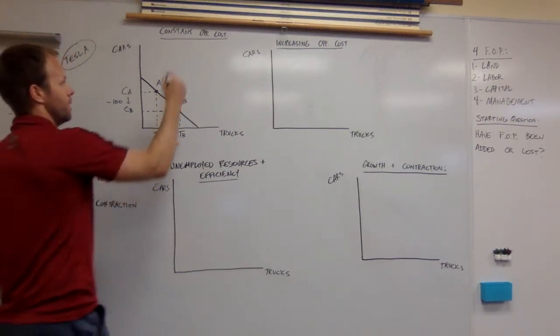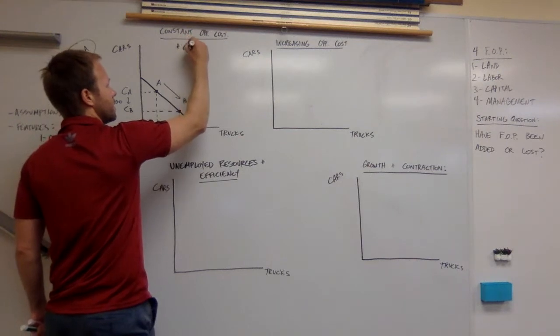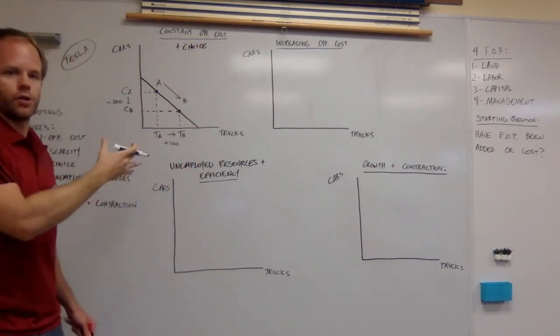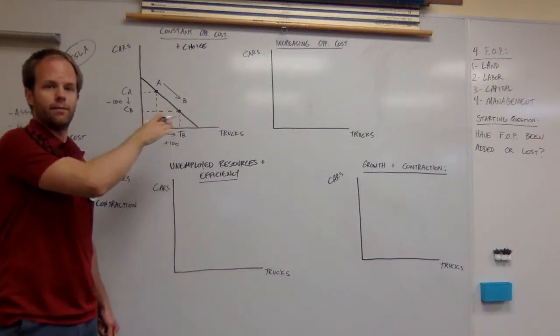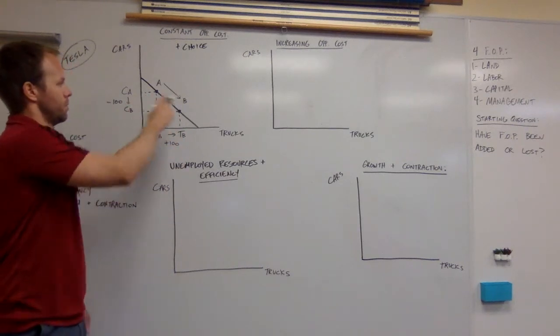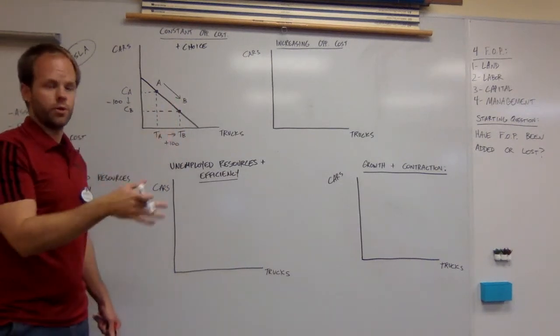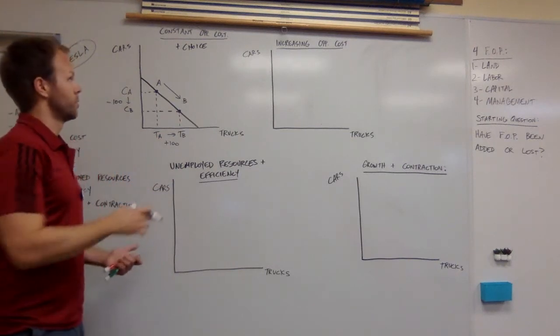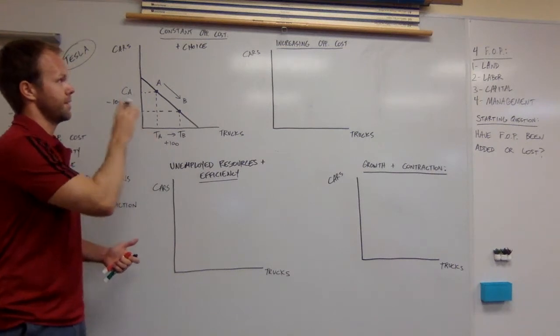It's also important to note that this is a choice. Tesla's making a choice here. They think they can make more money making trucks, so they have chosen to give up some production of cars. That's a choice. We can show constant opportunity cost and choice.